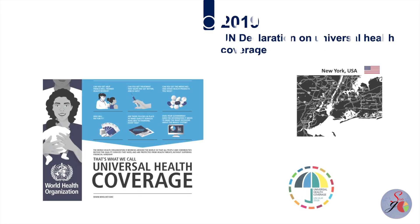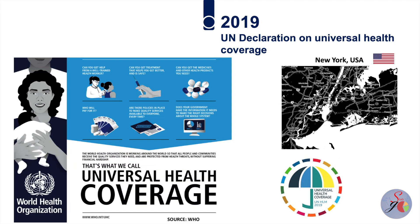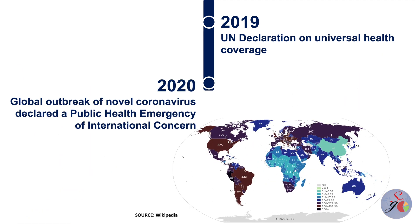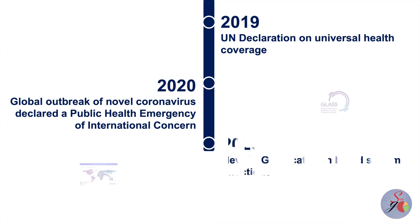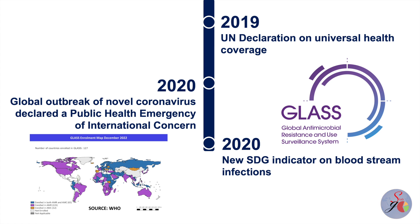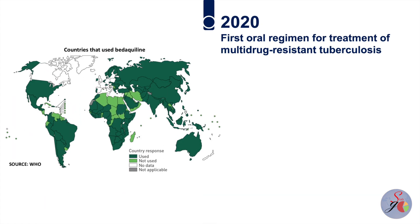World leaders adopted a high-level United Nations political declaration on universal health coverage in 2019 — the most comprehensive set of health commitments ever adopted at this level. In 2020, the WHO declared the global outbreak of novel coronavirus a public health emergency of international concern. The UN Statistical Commission approved a new Sustainable Development Goals indicator on bloodstream infections due to selected antimicrobial-resistant organisms in 2020, with WHO as custodian through its Global Antimicrobial Resistance and Use Surveillance System. In 2020, the first oral regimen for the treatment of multidrug-resistant tuberculosis was established.